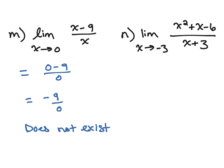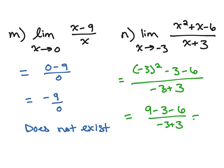And problem N – we substitute in our negative 3 and I get negative 3 squared minus 3 minus 6 over negative 3 plus 3 is 9 minus 3 minus 6 over negative 3 plus 3. And this results in 0 over 0. This is a special case. This is called an indeterminate form and it's going to be the topic of our next video. This limit may actually exist, but we're going to have to do some manipulations to find out. So we don't know the answer to this problem yet, but we'll find that out in the next video.